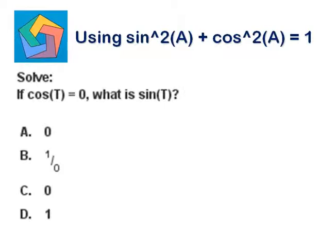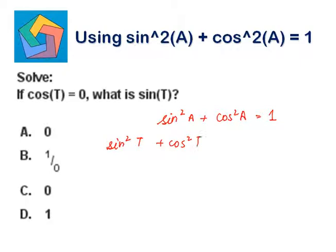Now, this is a trigonometric rule we have: sine squared a plus cos squared a should be 1. Here, a is a dummy variable — a can be any angle. So I can say, according to our question, sine squared t plus cos squared t should be equal to 1.